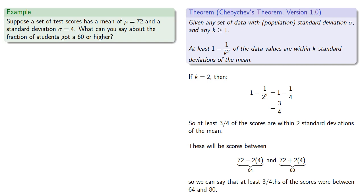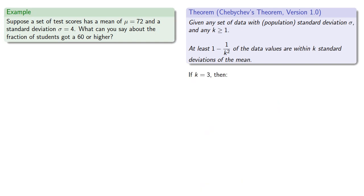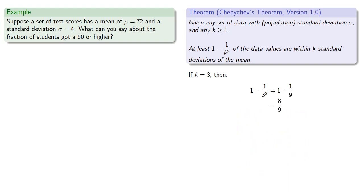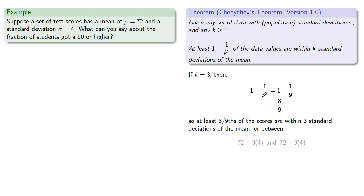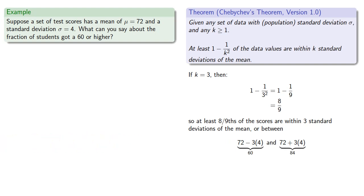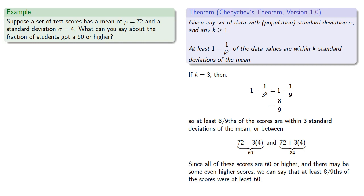Let's try k equals 3. If k equals 3, then 1 minus 1 over 3 squared equals 8 ninths. So at least 8 ninths of the scores are within three standard deviations of the mean — that's between 72 minus 3 standard deviations and 72 plus 3 standard deviations, or scores between 60 and 84. Since all of these scores are 60 or higher, and there may be even higher scores, we can say that at least 8 ninths of the scores were at least 60.